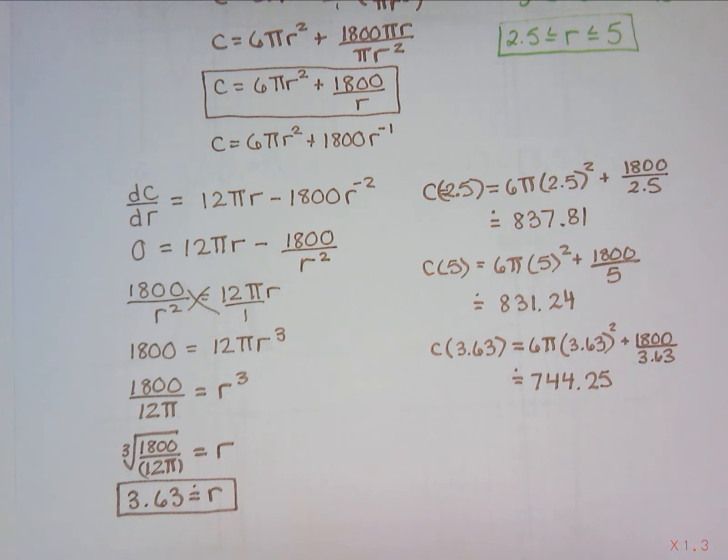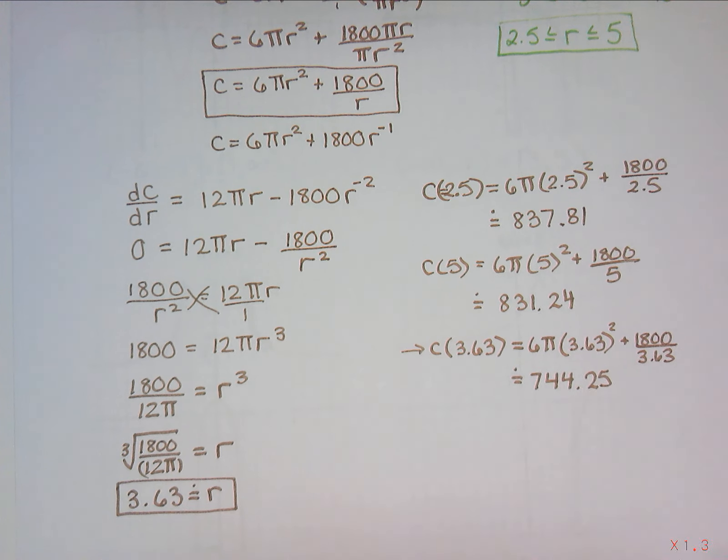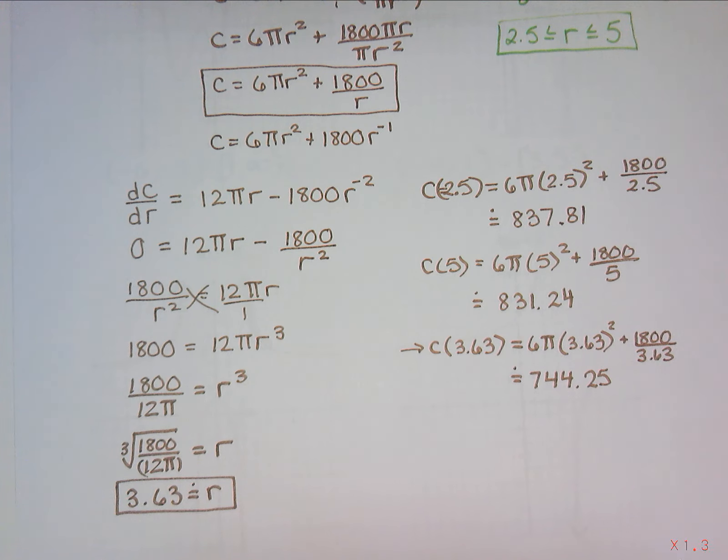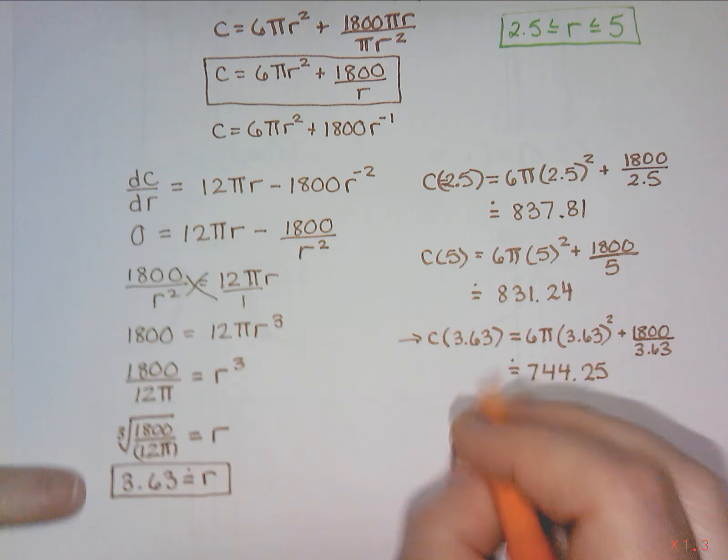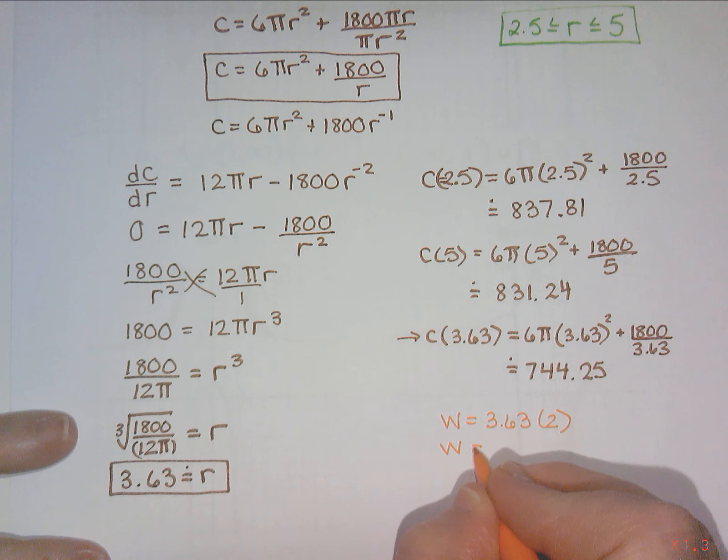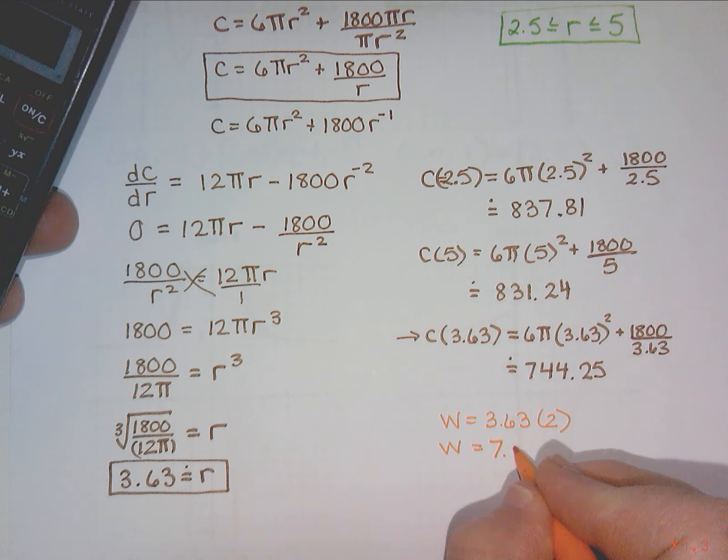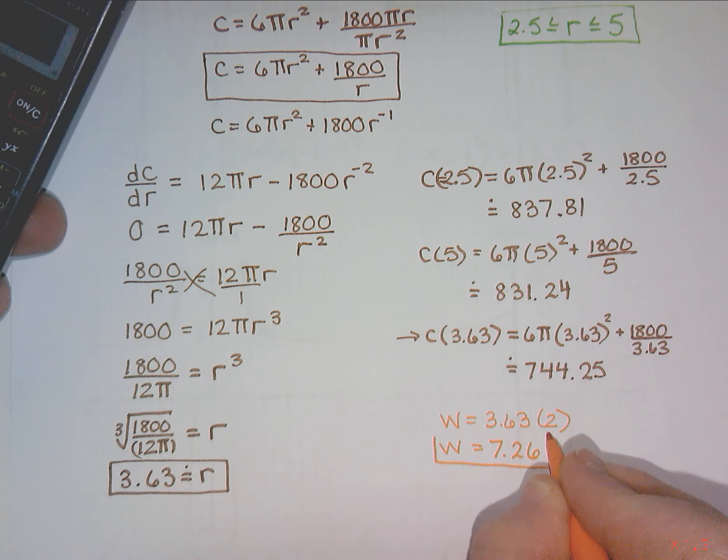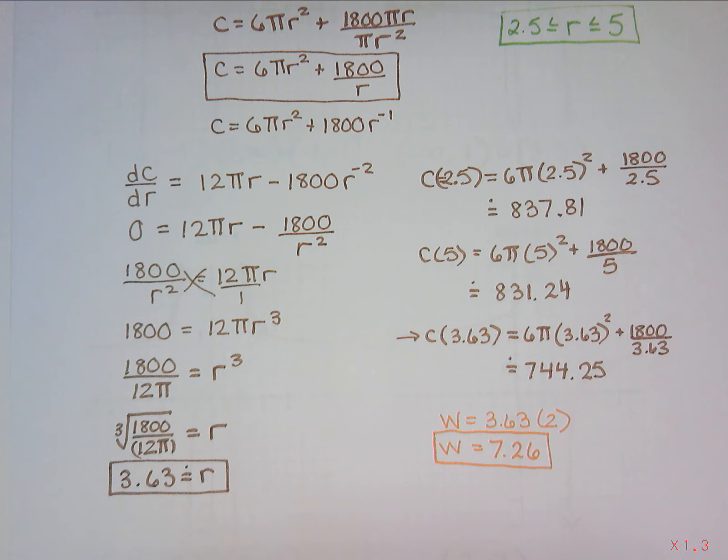So the question was, which one was the cheapest? Well, that's the $744.25 when the radius is 3.63. It asks for the width of the cheapest possible can, so I would take that 3.63, which is the radius, and times it by 2 to get the width. And that gives me 7.26. So our minimum cost is $744.25 when the can is 7.26 centimeters wide.